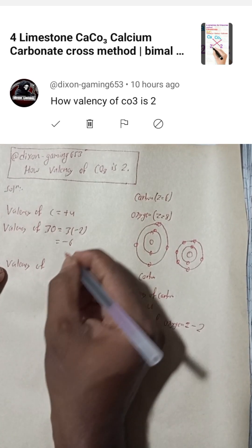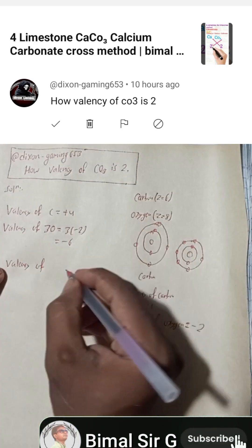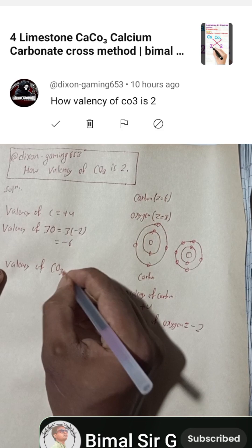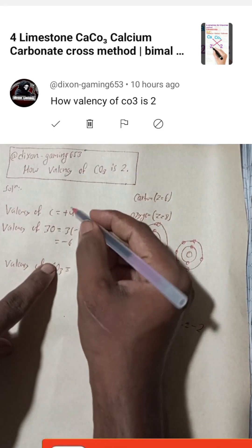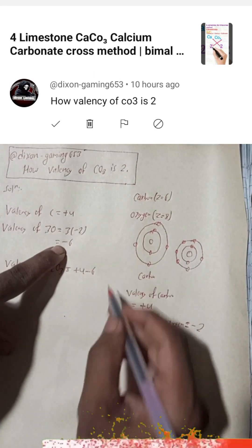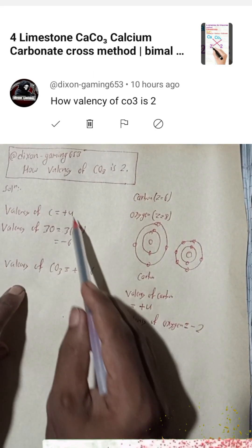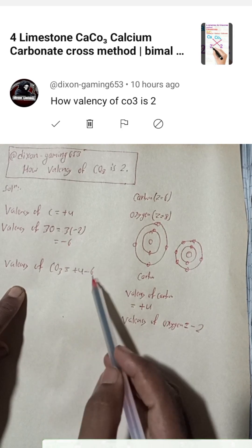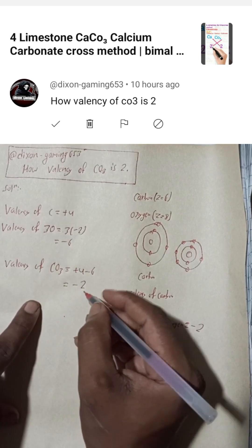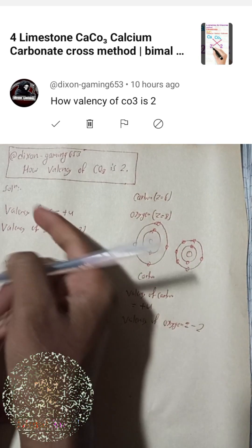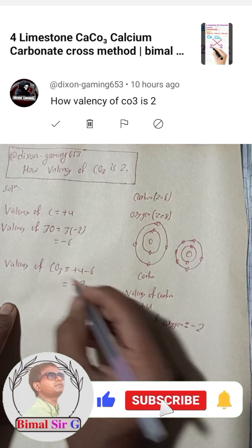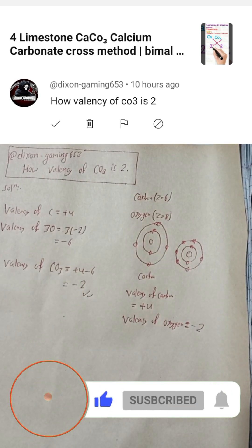Therefore, the valency of CO3 — this is the radical — is equal to plus 4 plus (minus 6). Adding these: plus 4 minus 6 equals minus 2. Hence, the valency of CO3 is 2. This is the solution for the subscriber DexonGaming653's question on how the valency of CO3 is 2.